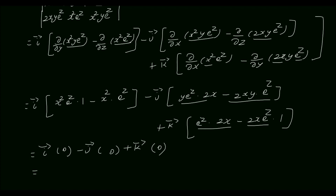So finally, we get curl F vector is 0. Since curl F vector is 0, F vector is irrotational.